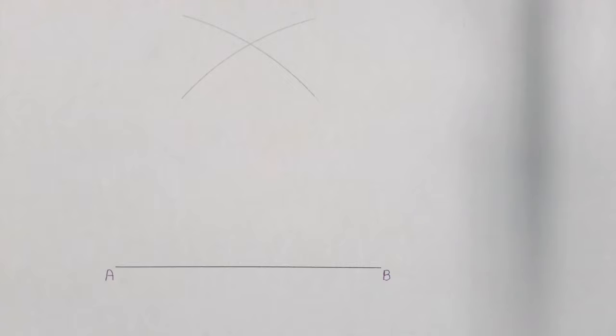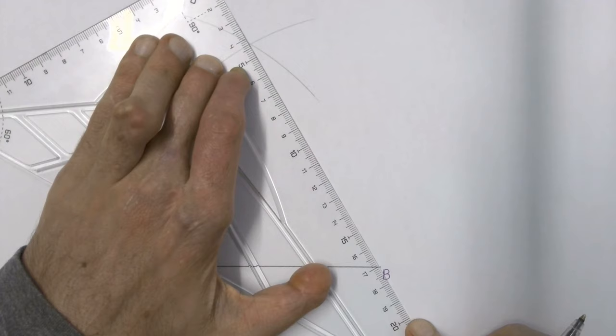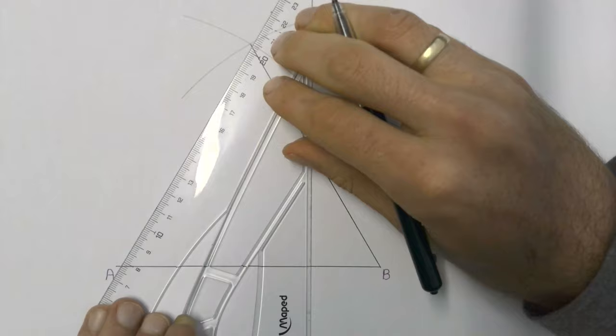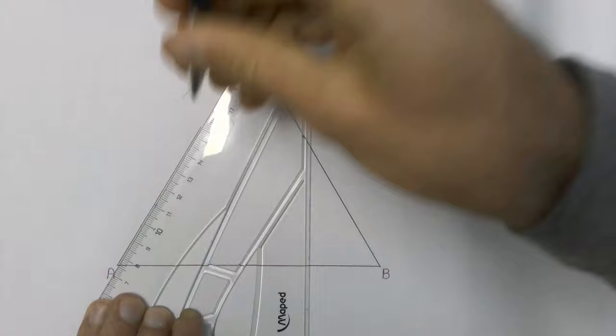Then to complete our triangle, all we do is go and join the intersection point between those two arcs to point B, and then that same intersection point we join to point A.